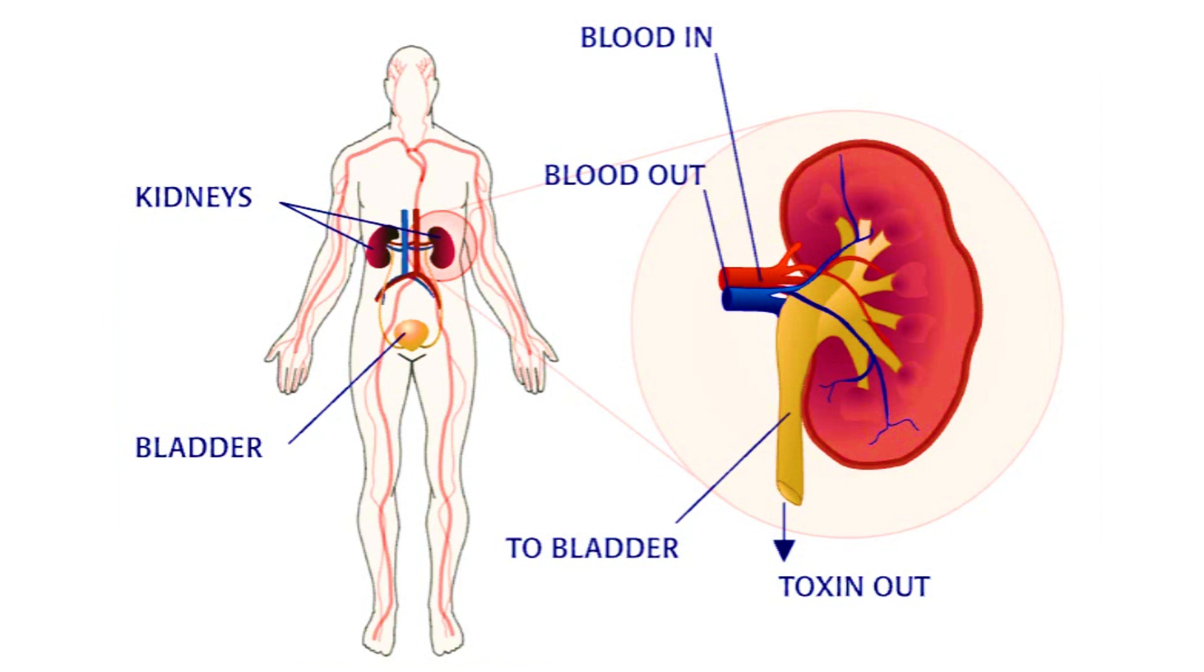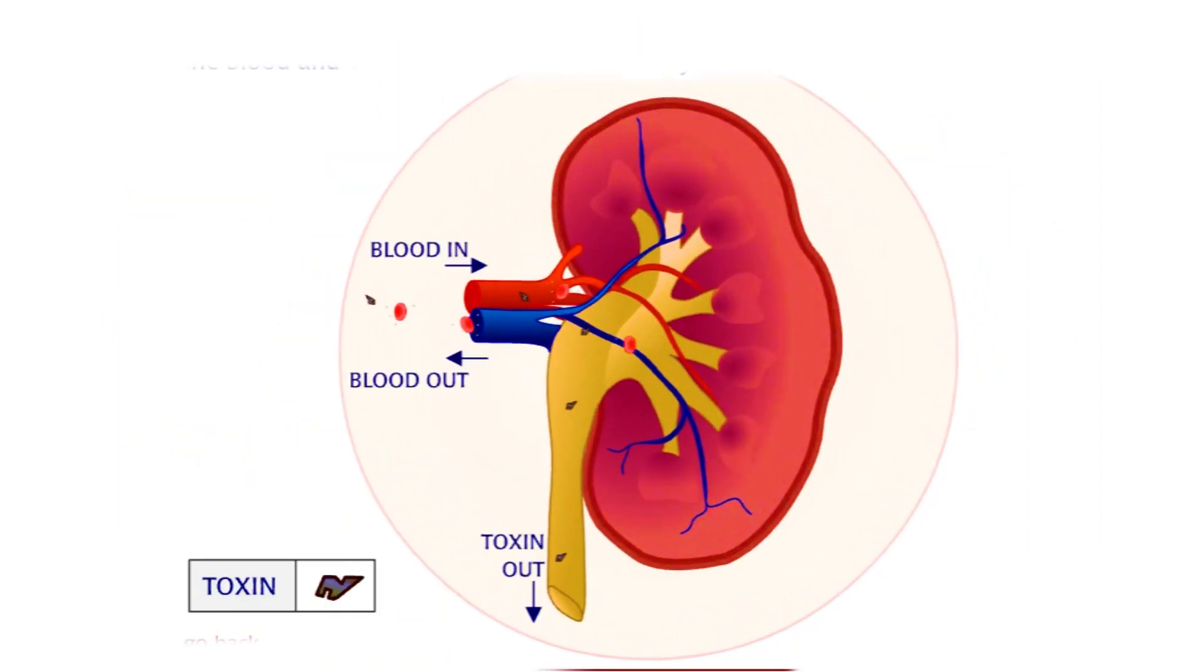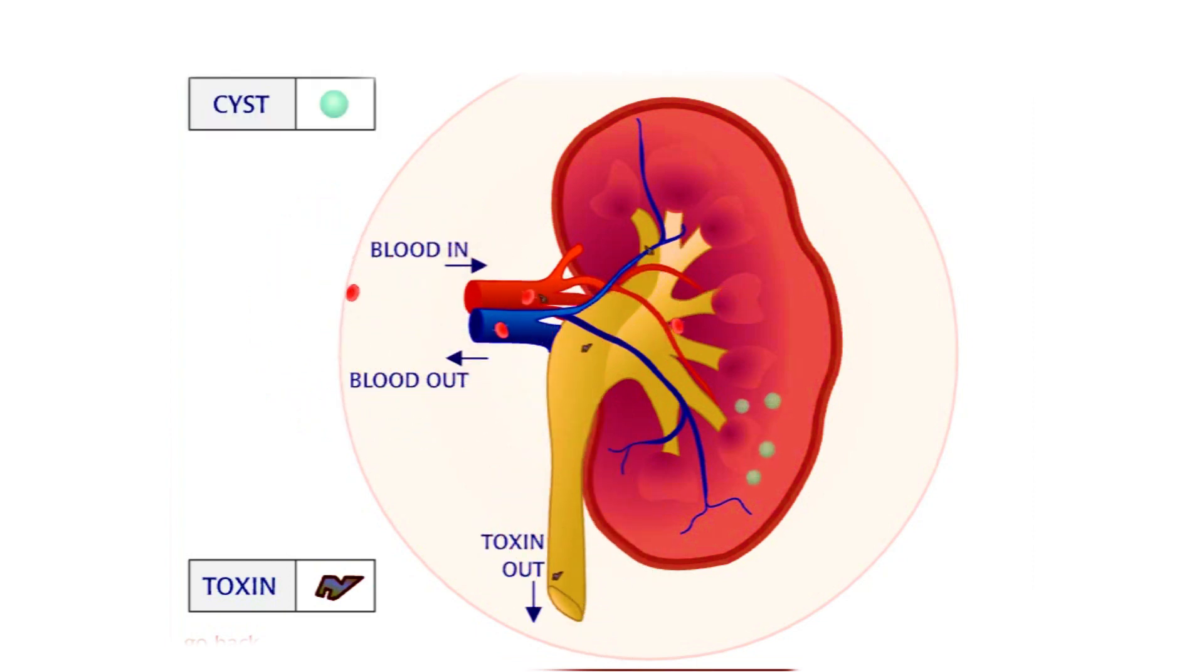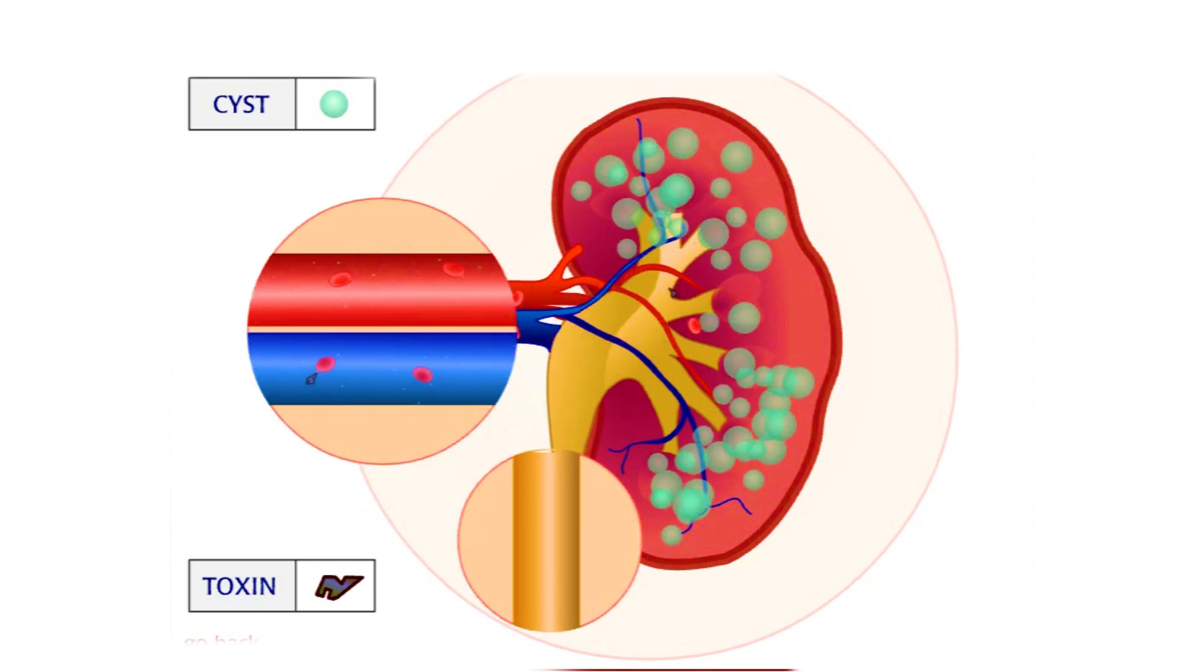In polycystic kidney disease, cysts grow inside a person's kidneys, in most cases leading to kidney failure. A healthy kidney filters out toxins in the blood and eliminates them from the body in the form of urine. The cysts interfere with kidney function.